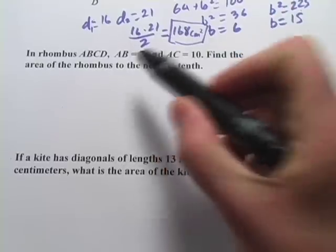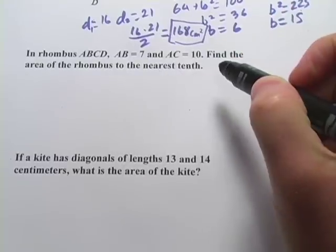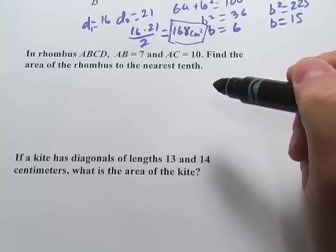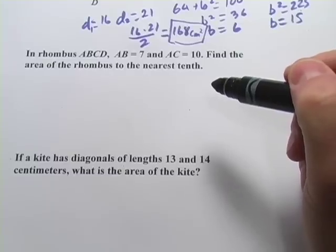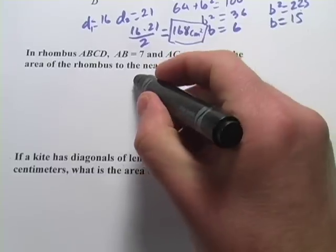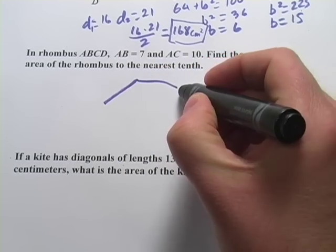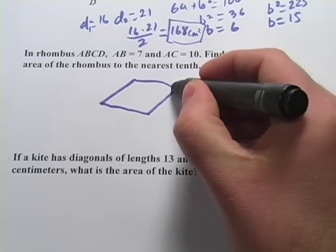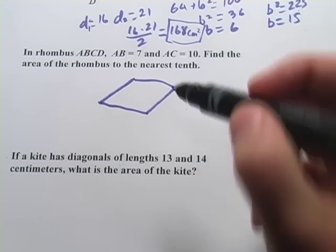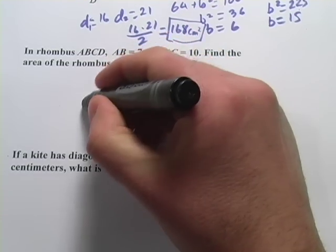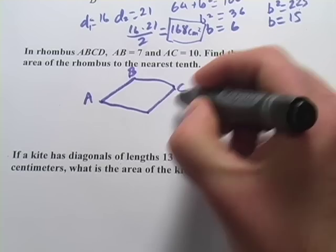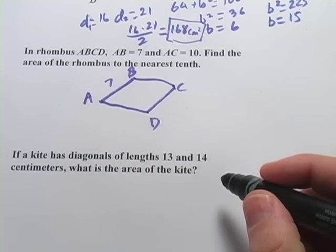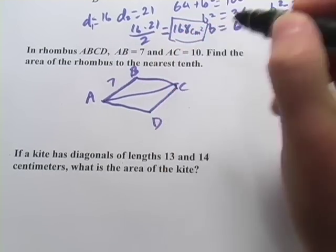It says, in rhombus ABCD, AB is 7, AC is 10. Find the area. Now, a rhombus is a kind of kite. It's just a kite that has all its sides the same length. So if you think about that, you might have something that looks like this. Or close enough. Just imagine all the sides are exactly the same length. And if we're going to label this A, B, C, D, they're telling us AB is 7. And AC, that's one of the diagonals, is 10.